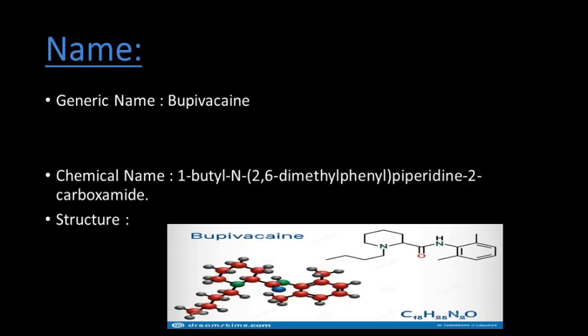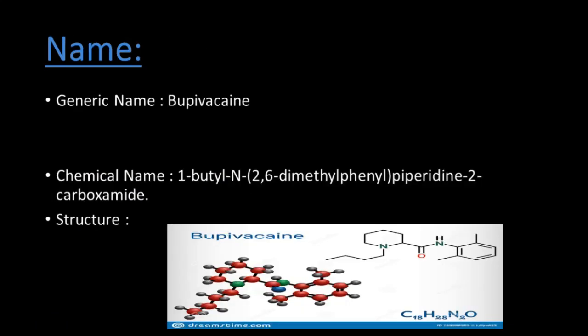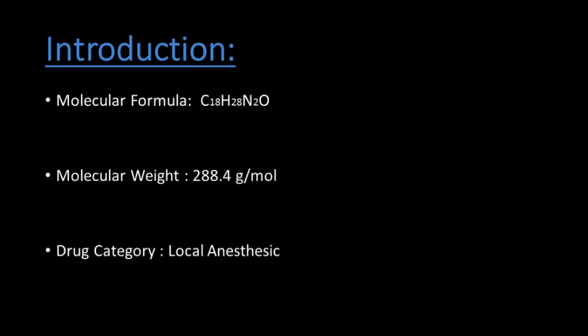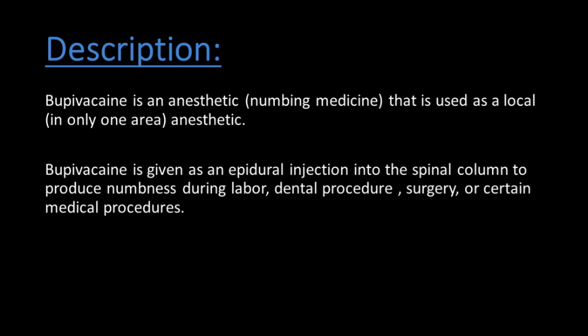My name is Dr. Muhammad Al-Hammad. Generic name: Bupivacaine. Chemical name: 1-butyl-N-(2,6-dimethylphenyl)piperidine-2-carboxamide. Molecular formula: C18H28N2O. Molecular weight: 288.4 grams per mole. Drug category: local anesthetic.